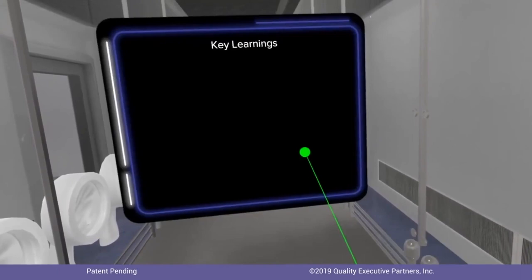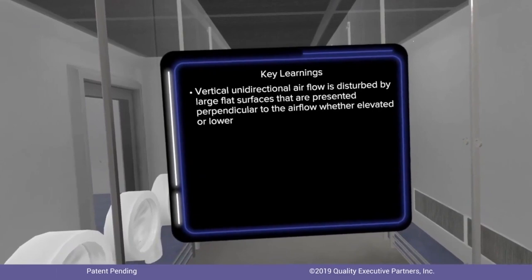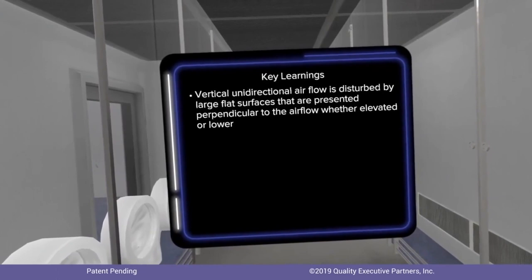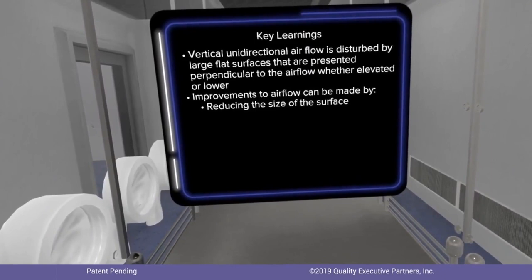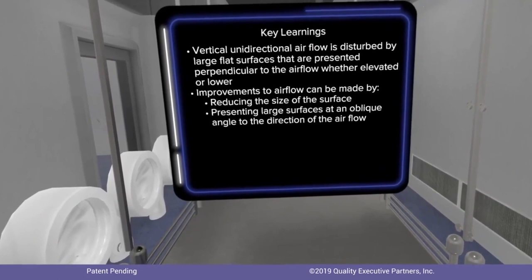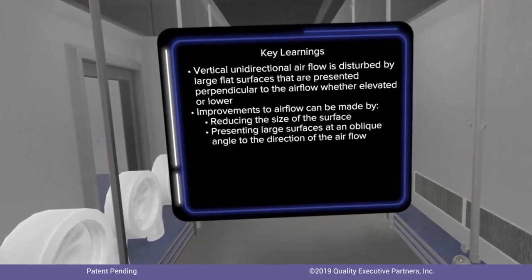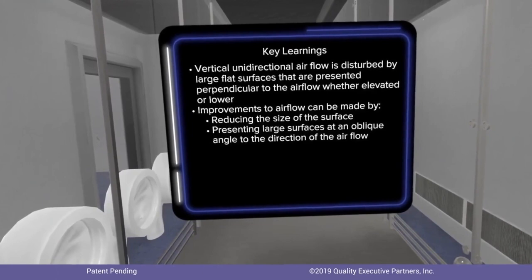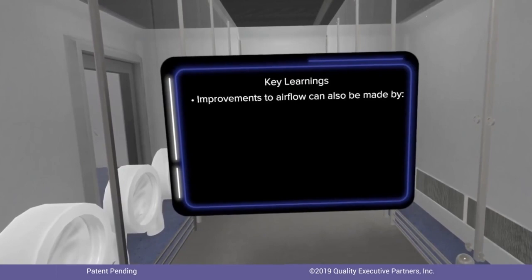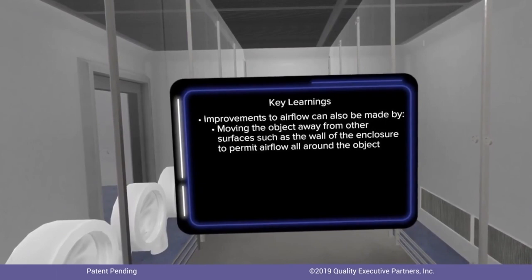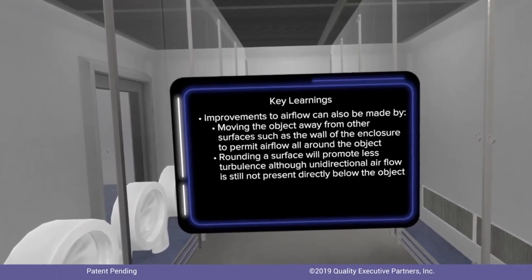Key learnings from this immersive: Vertical unidirectional airflow is disturbed by large flat surfaces presented perpendicular to the airflow. Improvements can be made by reducing the size of the surface, thereby disrupting a smaller amount of overall airflow. Improvements can also be made by presenting large surfaces at an oblique angle to the airflow direction — such as when the cube was presented on edge, creating sloped rather than flat surfaces to the airstream. Perforating the surface to permit air to move through the object can also improve airflow, though perforated surfaces present cleaning challenges. Moving the object away from other surfaces like the enclosure wall, and rounding a surface, will also promote less turbulence.